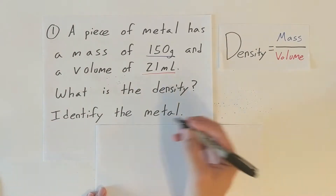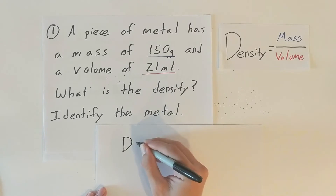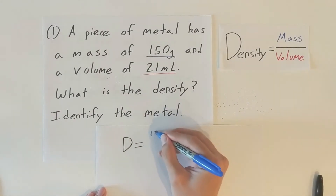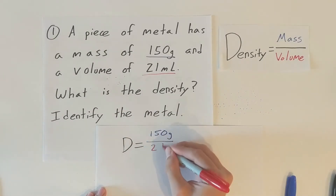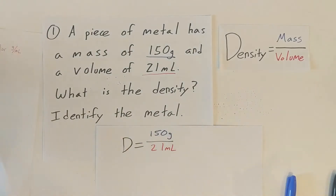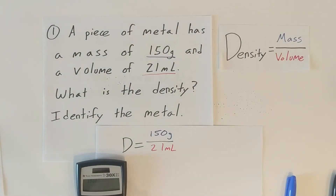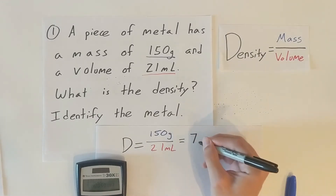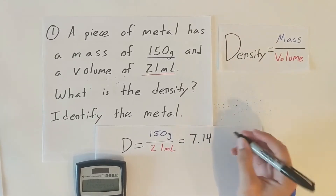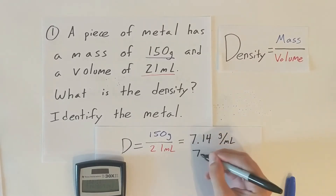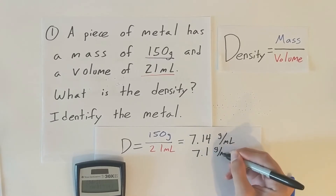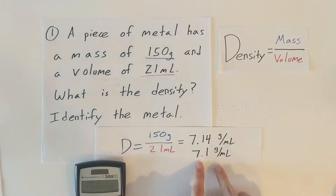Density equals mass — 150 grams — divided by 21 milliliters. What is the density? We put it into our calculator: 150 divided by 21 equals 7.14 grams per milliliter. Using significant figures, that would be about 7.1 grams per milliliter. We're going to use this density now to identify what the metal is.